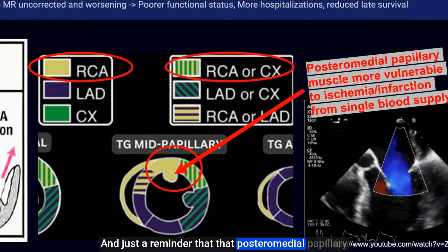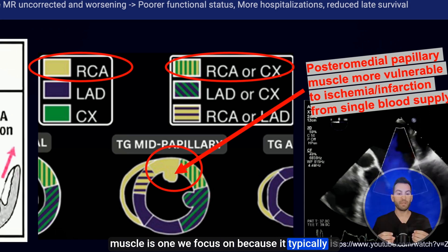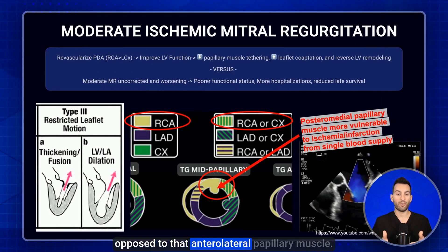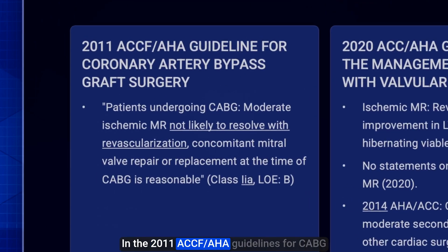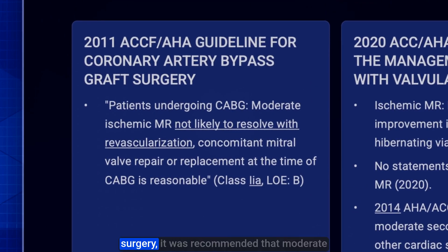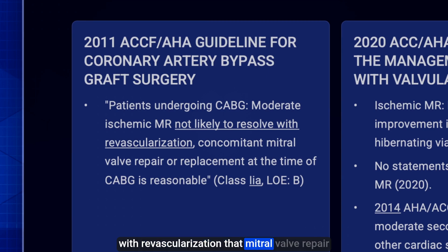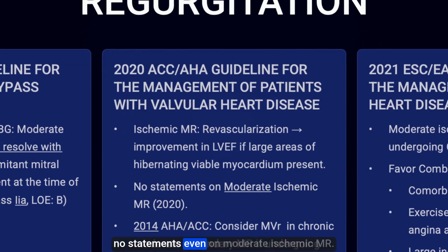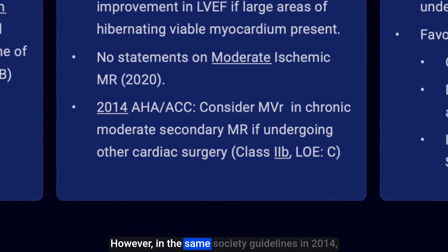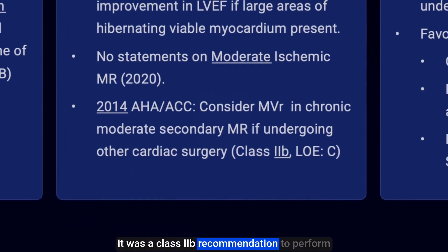The posterior medial papillary muscle is particularly vulnerable to ischemia or infarction-related changes because of its single blood supply, as opposed to the anterolateral papillary muscle. In the 2011 ACCF/AHA guidelines for CABG surgery, it was recommended that moderate ischemic MR believed not to resolve with revascularization should have mitral valve repair or replacement at the time of CABG. In the 2020 ACC/AHA guidelines, there were no statements on moderate ischemic MR; however, in 2014, those same society guidelines gave a Class 2B recommendation to perform mitral valve surgery in moderate secondary MR.